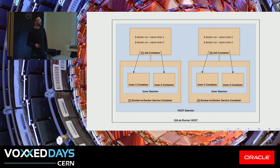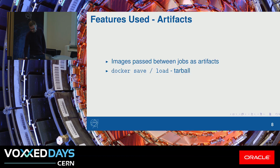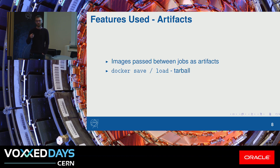There are some pitfalls I cannot go into, but I list them in the bonus slides. We are heavy users of artifacts. We use them to pass the Docker image between the test stages. So we build the image first, and then we pass it to a testing stage before passing it to a push stage where it's only then pushed up to a registry. So if the image doesn't pass our tests, it's never pushed up to the registry, so you don't have bad images in the registry.